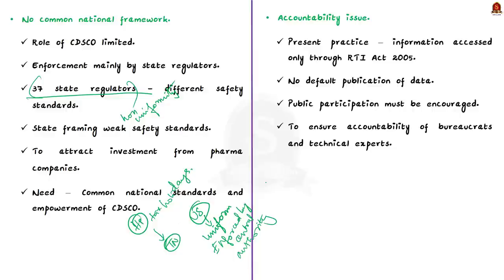The third issue: almost all decisions regarding drugs are decided by unelected bureaucrats and technical experts. Although their decisions are based on scientific data, to ensure accountability, transparency must be ensured. Under the present scenario, after a decision regarding a drug is made, the data based on which the decision was arrived at can be accessed only through the Right to Information Act 2005 — the data is not published to the public by default. The author feels that all clinical test data and inspection results must be made available to the public by default, but the bill is silent on this aspect. The draft bill thus fails to make accommodation for public participation in the decision-making process.